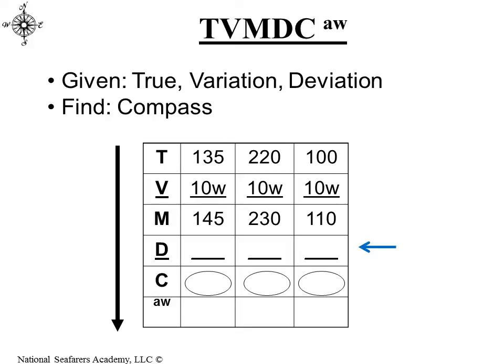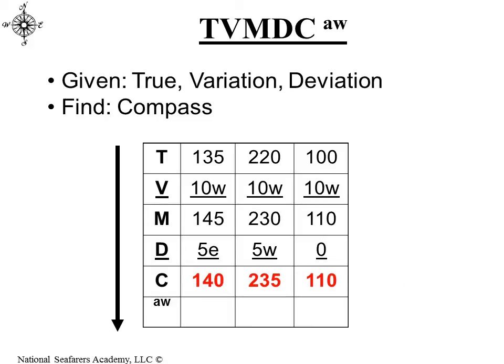The next thing we need to do is apply the deviation. We go into the deviation table with those different magnetic headings and determine the deviation. When we go into the table, we have 5 east for the 145 magnetic heading, 5 west for the 230 magnetic heading, and 0 deviation for the 110 magnetic heading. We apply that to determine our compass — it's just simple arithmetic: 140 compass, 235 compass, and 110 compass.